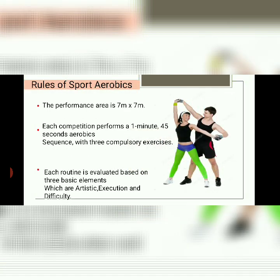Rules of sports aerobics: the performance area is 7 meters by 7 meters. Each competitor performs a 1 minute 45 second aerobics sequence with 3 compulsory exercises. Each routine is evaluated based on 3 basic elements: artistic, execution, and difficulty.